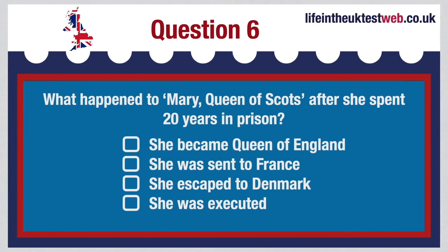What happened to Mary, Queen of Scots, after she spent 20 years in prison? She became Queen of England? She was sent to France? She escaped to Denmark? Or she was executed? The correct answer is: Mary was executed because she was accused of plotting against Elizabeth I.